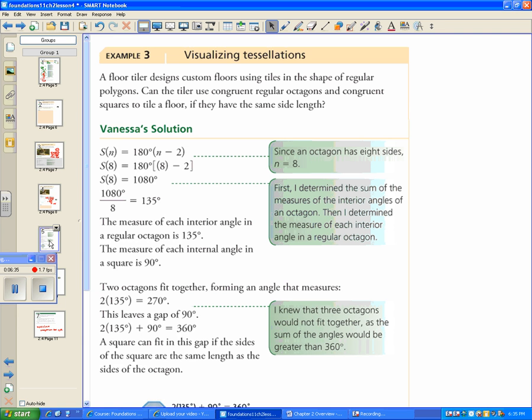Now we're going to do something called tessellations. We have this floor tiler who designs custom floors using tiles in the shapes of regular polygons. Can he use congruent regular octagons and squares to tile a floor if they have the same side length? So we have something with eight sides, and squares regular, so all the same sides. What I'm wondering is, can those nicely fit together? That's what they're asking. Does that exist?